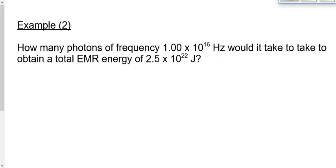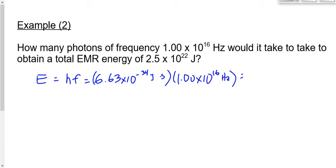Another example. This is the last one for the day. How many photons of frequency 1.00 times 10 to the 16 hertz would it take to obtain a total EMR energy of 2.5 times 10 to the 22 joules? What units do you think we're going to use here for Planck's constant? Yep. The joule one. Yeah, 6.63 times 10 to the 34 joule seconds. Let's get the energy. Let's get the energy of a single photon. That's going to be H times F. The energy of a photon, H times F. And let's get it in joules since we've got an energy here for the total EMR in joules. 6.63 times 10 to the 34 joule seconds times a frequency of 1.00 times 10 to the 16 hertz. That's going to give us 6.63 times 10 to the negative 18 joules.